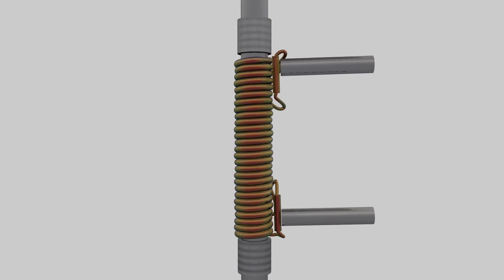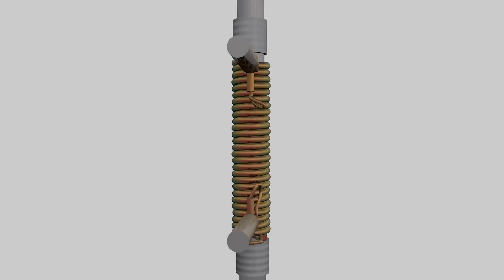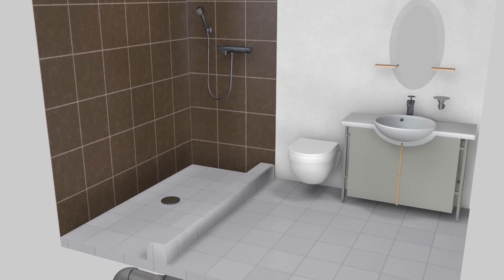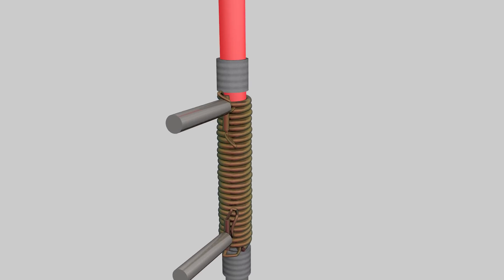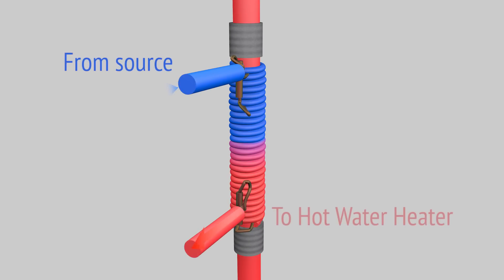It's basically a copper coil that goes around the drain so when the drain water is going down it releases the heat, the cold water picks it up, it's a heat transfer, and then what you're doing is preheating the water before it goes in the hot water tank.